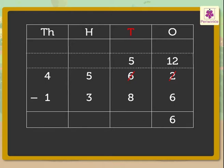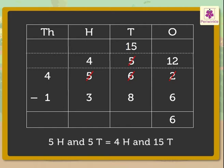Subtract the tens. That is, 5 minus 8. As the tens are not enough, we regroup the hundreds. That is, 5 hundreds and 5 tens is equal to 4 hundreds and 15 tens. Therefore, 15 minus 8 is equal to 7 tens.